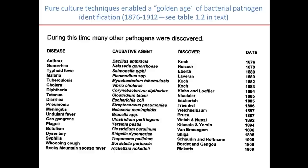The application of Koch's postulates and pure culture techniques enabled a golden age in bacterial pathogen identification — people were able to start identifying the microbial causative agents of diseases. One thing that's important to note is that you will be tested on all of the diseases, the causative agents, the discoverer, and the date. Just kidding. You don't have to do that. That would be ridiculous.